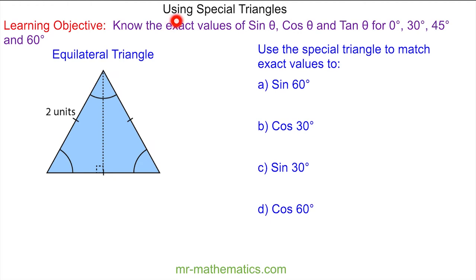Welcome to our lesson on using special triangles to find the exact values of sin, cos, and tan between the range 0°, 30°, and 45°. To do this we're going to use an equilateral triangle, because we have a 60° angle. When we bisect the angle at the top, we create a 30° angle and a 90° angle.